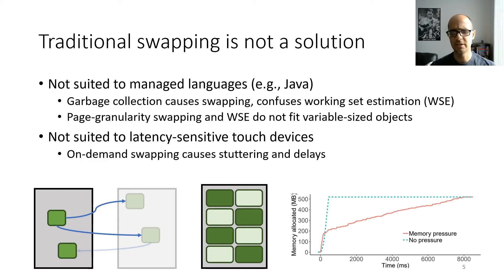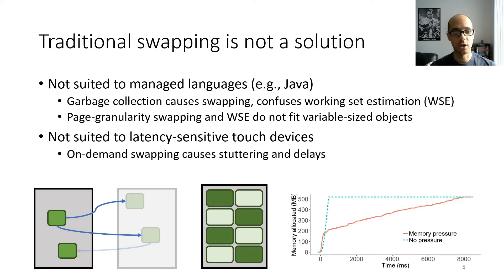We did a study where we enabled a Linux swap file on an Android device and measured the amount of time it took to allocate 500 megabytes of memory with and without memory pressure. Under memory pressure, that allocation took close to eight seconds — which is just way too long of a delay to have on the allocation critical path.